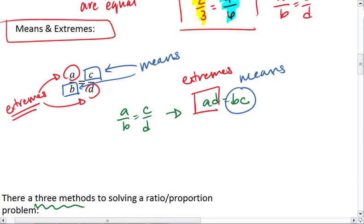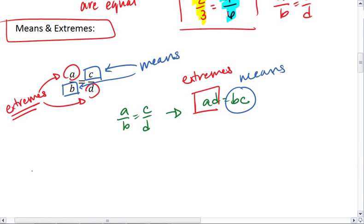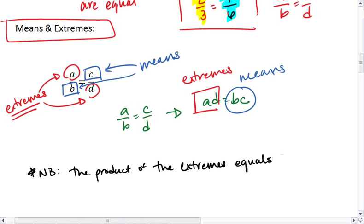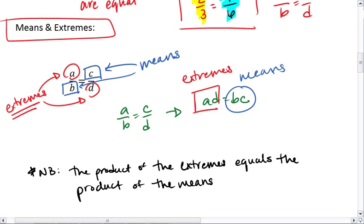We see that the extremes multiply together equals the means multiply together — the product of the extremes equals the product of the means. This is important to note; it comes up on standardized tests a lot, and it's important vocabulary to know in general: the means and the extremes.